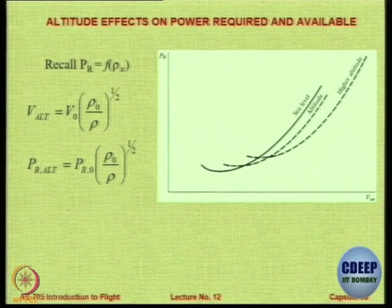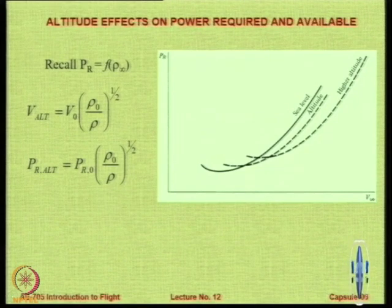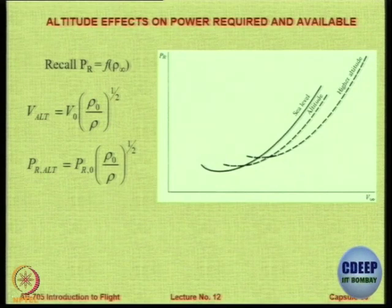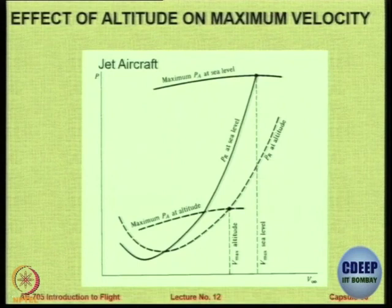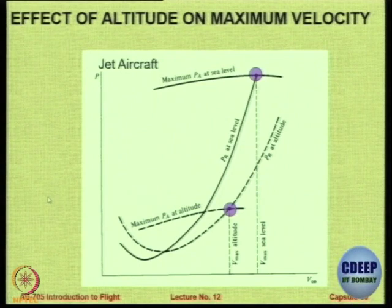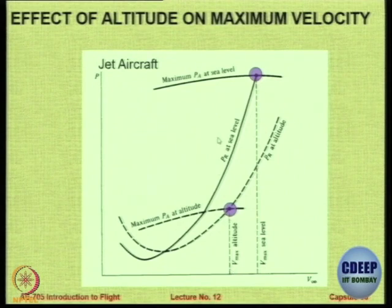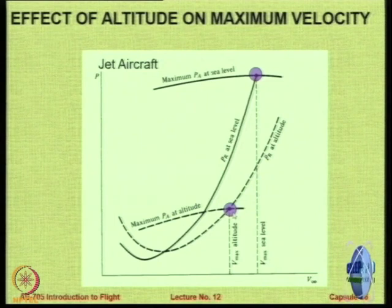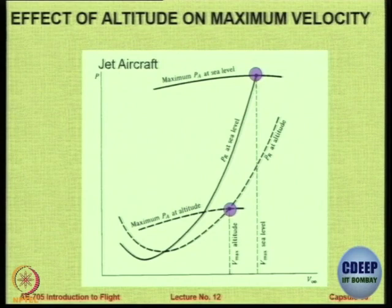Looking at the power curves, the power available also reduces with altitude. The power available is not exactly a straight line as shown in Anderson's textbook — that is a simplification; the real curve is slightly curved. A similar story occurs: the velocity at which the power gap is maximum increases slightly with altitude. Once again a point is reached where power available equals power required and you cannot go above that altitude. A simple approximation is that power required at altitude equals power required at sea level times the square root of the density ratio.